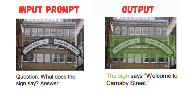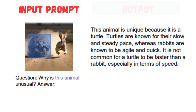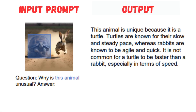Additionally, the model can extract text from an image and highlight the region with a bounding box. The researchers asked the model what the sign in the image said, and KOSMOS-2 responded with 'Welcome to Carnaby Street.' Another remarkable ability is visual reasoning: Microsoft researchers asked the model why a particular animal in an image was unusual. The model correctly identified the animal as a turtle and provided a comprehensive explanation of its unique traits, noting that turtles are known for their slow and steady pace, which stands in contrast to the agile and swift nature of rabbits.